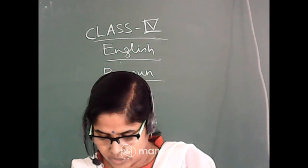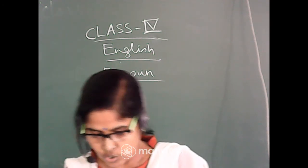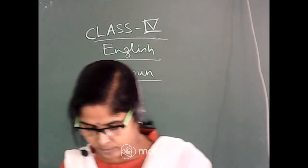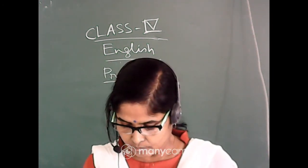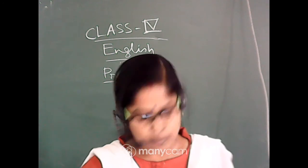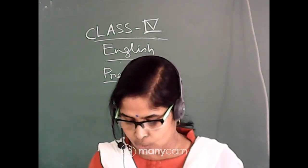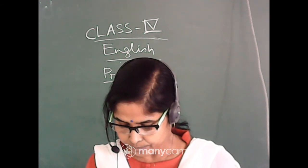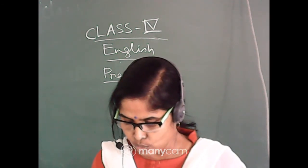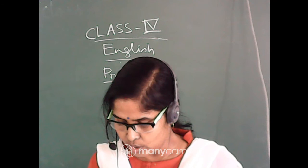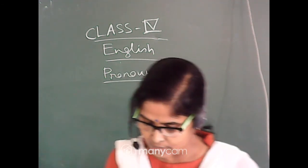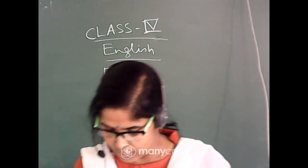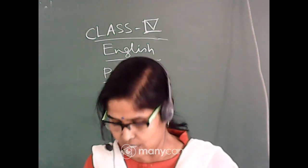Number six: Rupam, this notebook is not yours, Rosie. Circle 'Rupam', 'notebook', 'Rosie'. Underline 'this' and 'yours'. Rosie: I know it is not mine, I only want to see it. Circle 'Rosie', underline 'I', 'mine', 'it'.